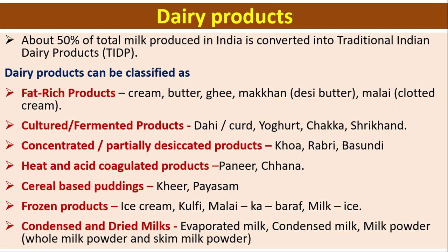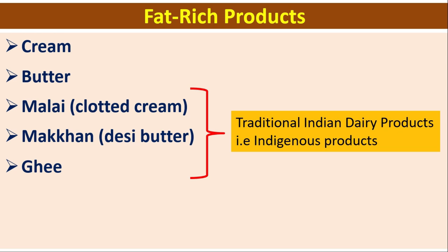Dairy products can be classified as fat-rich products like cream, butter, ghee, makhan, and malai; cultured or fermented products like dahi or curd, yogurt, chakka, and shrikhand; concentrated partially desiccated products like khawa, rabri, and basundi; heat and acid coagulated products like paneer and chana; cereal-based puddings like kheer and payasam; frozen products like ice cream, kulfi, and milk ice; and condensed and dried milks including evaporated milk, condensed milk, whole milk powder, and skim milk powder.